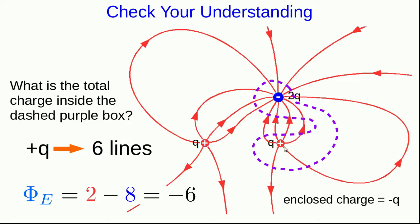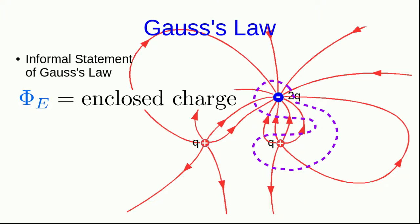What we've just seen and used to solve a simple problem is an informal statement of Gauss's law. Basically, our current statement is that the flux through a closed surface is equal, or at least proportional, to the enclosed charge inside the surface.